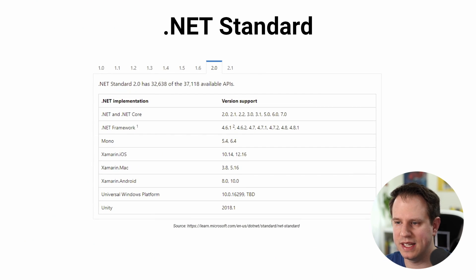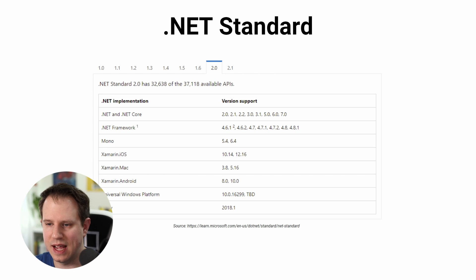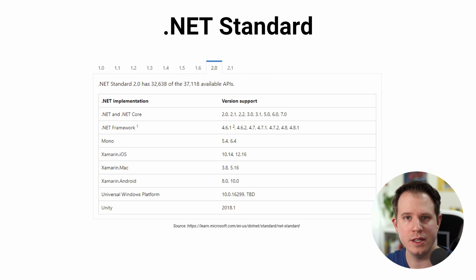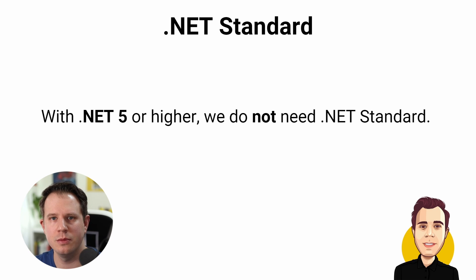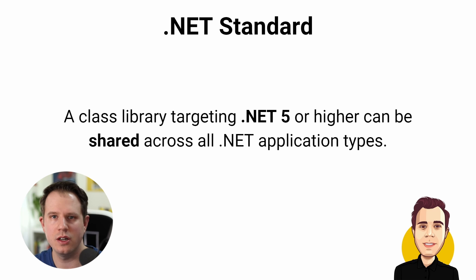There are different versions of the .NET Standard, with version 2.1 being the latest and final release of the specification. The higher the version number, the more APIs are supported — but higher .NET Standard versions also require newer versions of the implementations. If you still need to share code between all .NET versions, .NET Standard might still be a viable option. If targeting .NET Standard today, I suggest targeting version 2.0, as it's implemented in .NET Core 2.0 and .NET Framework 4.6. However, .NET Standard isn't relevant for modern .NET development anymore. Beginning with .NET 5 and its unification of the platform, we don't need .NET Standard — a class library targeting .NET 5 or higher can share code between all modern .NET application types.